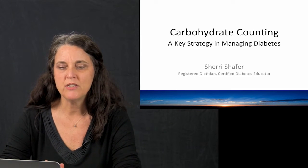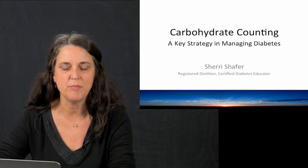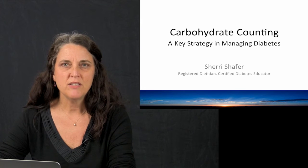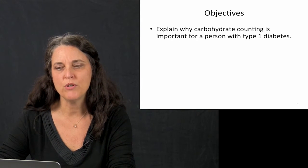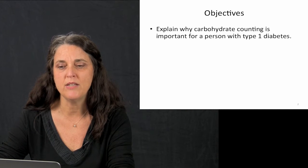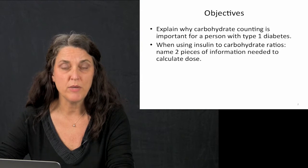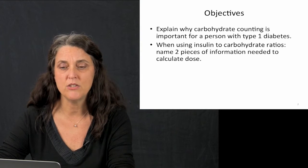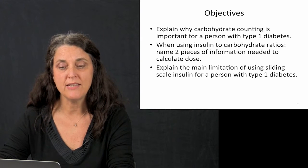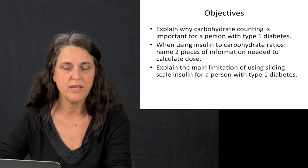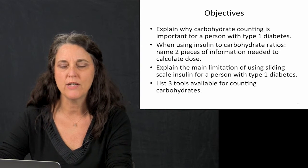The first module is going to be on carbohydrate counting, which is a key strategy in managing diabetes. The objectives of this module are to explain why carbohydrate counting is important for a person with type 1 diabetes, name two pieces of information needed to calculate the dose when using insulin-to-carbohydrate ratios, explain the main limitations of using sliding scale insulin for a person with type 1 diabetes, and to list three tools available for counting carbohydrates.